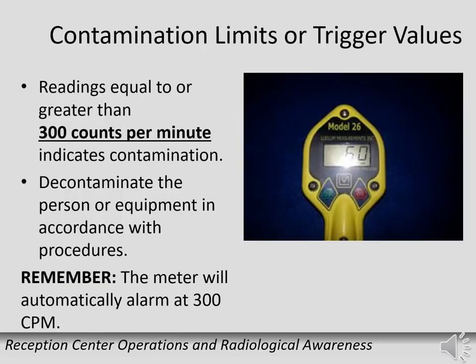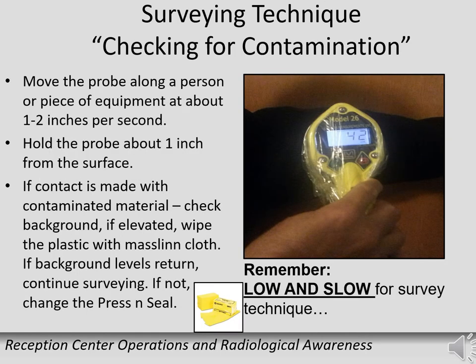If the meter reaches 300 counts per minute, the area being surveyed is considered contaminated and must be decontaminated per protocols; the meter will automatically alarm at this trigger number. With the meter about one inch from the person or object, move it at one to two inches per second, covering the entire area using the low and slow method. If you accidentally touch the person or object with the probe, pull the probe away and observe the reading. If the reading is similar to background, continue monitoring. If elevated, stop, change the plastic cover, and continue.